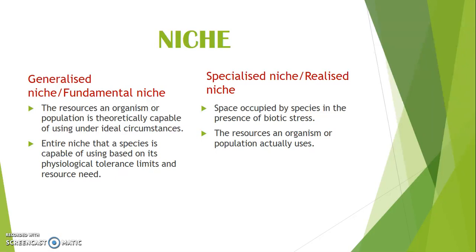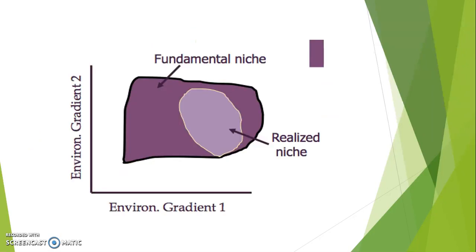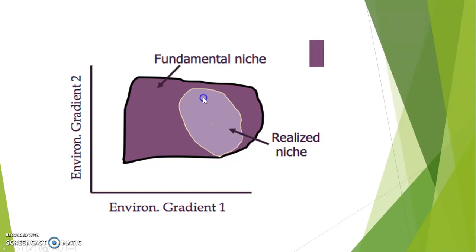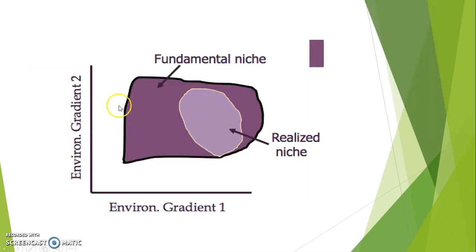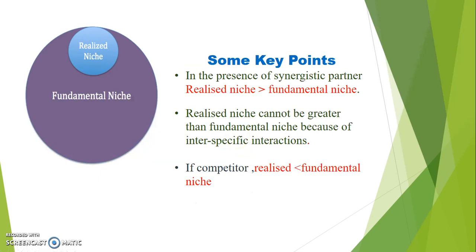Two related species may have the same ecological niche. In this diagram, the x-axis shows environmental gradient one and the y-axis shows environmental gradient two. The larger area represents the fundamental niche — that is, without biotic stress. The smaller area represents the realized niche, where the species actually utilizes resources in the presence of biotic stress.